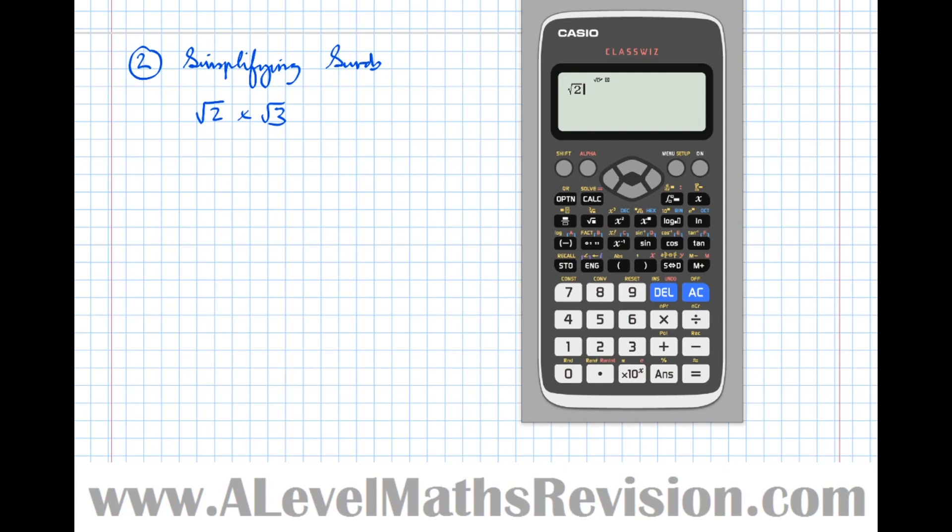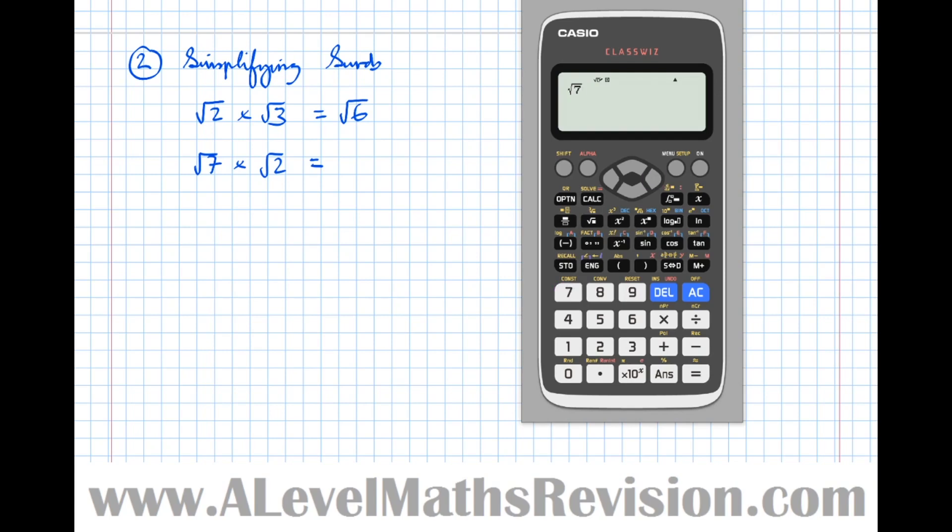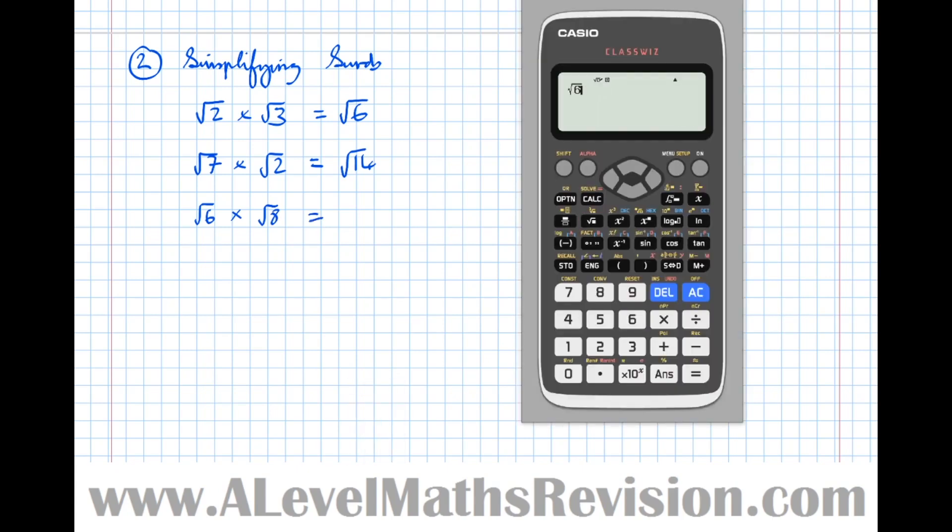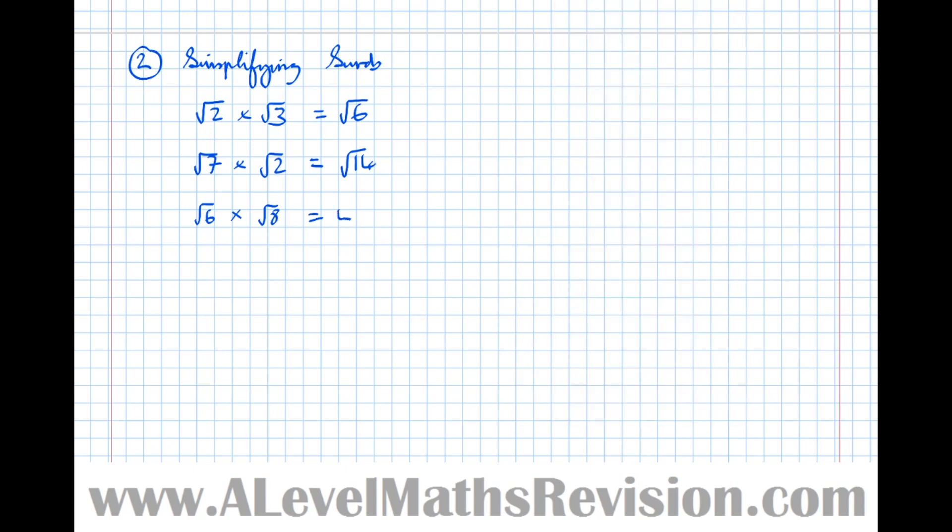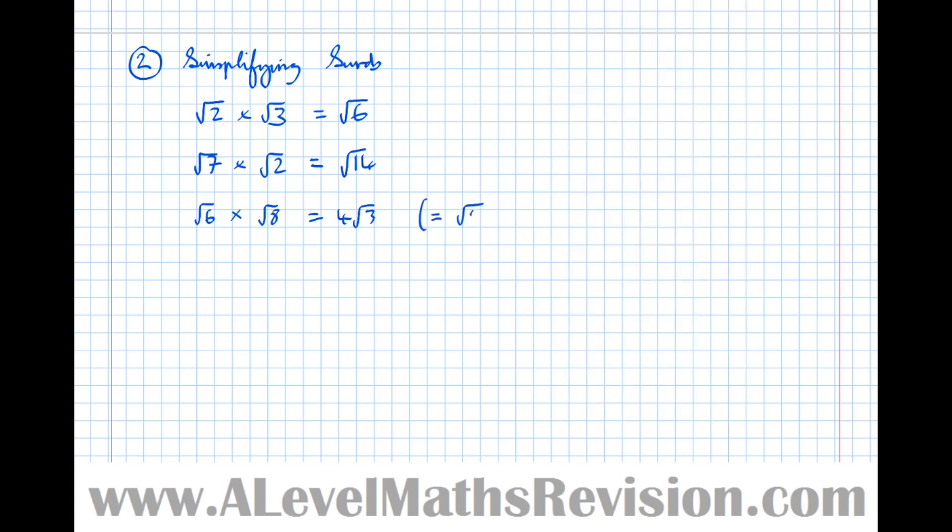Let's see what the calculator here tells us. Root 2 times root 3 gives us root 6. So possibly, there's a pattern here. Let's try a different one. Root 7 times root 2. If the same pattern holds, surely we should get root 14. Root 7 times root 2 does indeed give root 14. Let's try it with something else. Let's say root 6 times root 8, and that's equal to, hopefully, root 48. But we don't get that. We get 4 root 3. So that answer didn't come out as expected. However, if I just type in the calculator, root 48, then press equals, I see that it is 4 root 3 equals root 48. However, this form here is called simplified surd form. And what we're going to do now is look at what simplified surd form actually is.